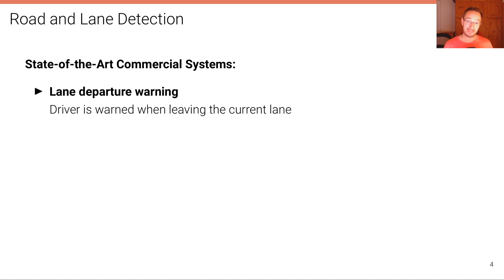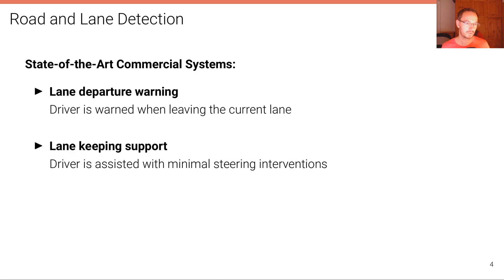Road and lane detection algorithms are actually already available in many cars today. State-of-the-art commercial systems include lane departure warning — systems that warn the driver when leaving the current lane; you may have seen the little symbol that flashes orange. The next level, also available in consumer cars today, is lane keeping support, where the driver is assisted with minimal steering interventions: when you leave your lane the car gently nudges you back, but it's very easy to override.